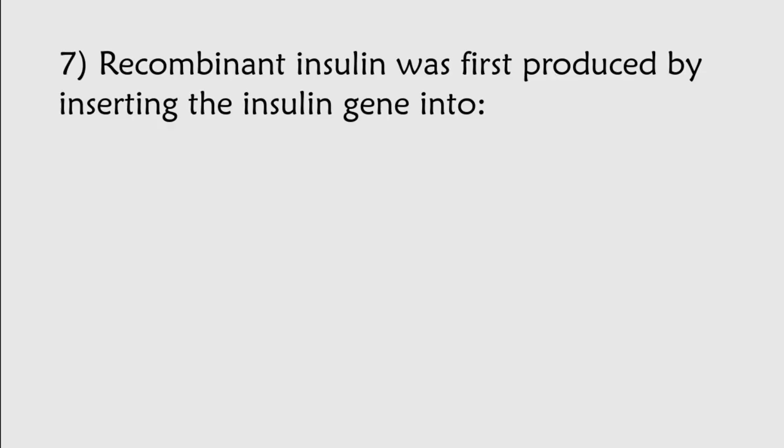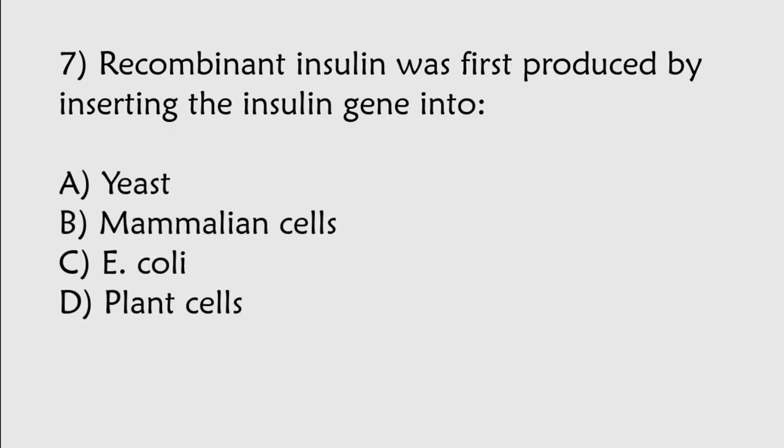Recombinant insulin was produced by inserting the insulin gene into yeast, mammalian cells, E. coli, plant cells. Correct answer is Option C, E. coli.